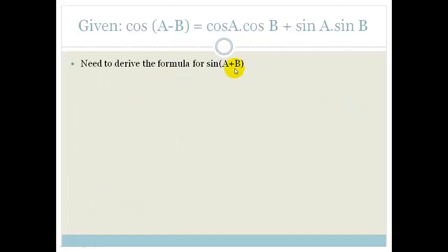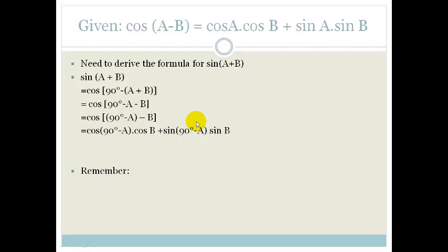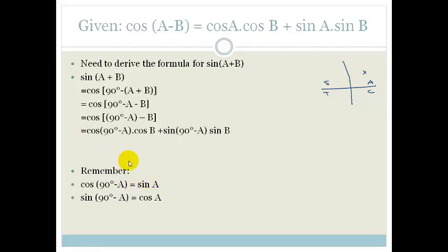Now we are trying to derive sin(A + B). Again, we use the co-function identity: sin(A + B) = cos(90° - (A + B)), which rearranges to cos((90° - A) - B). We expand using the formula to get: cos(90° - A) cos B + sin(90° - A) sin B. The co-functions in the first quadrant are all positive, so cos(90° - A) becomes sin A and sin(90° - A) becomes cos A.